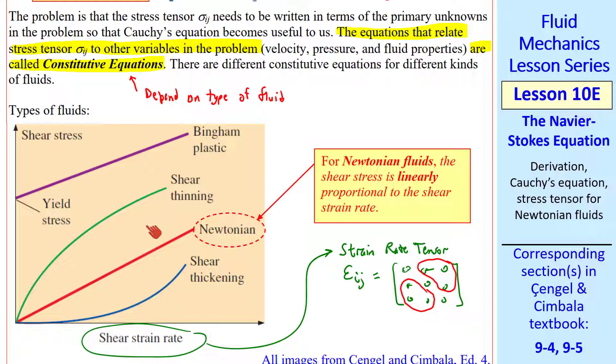A Bingham plastic is linear, but it starts at a non-zero shear stress. This is called a yield stress. So the fluid doesn't move until you reach this yield stress. A good example is toothpaste. For Newtonian fluids, the shear stress is linearly proportional to the strain rate tensor, and it starts at the origin.